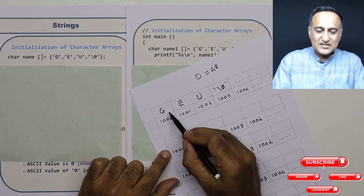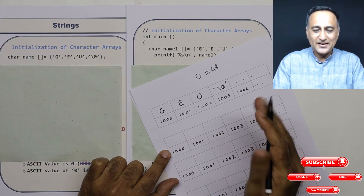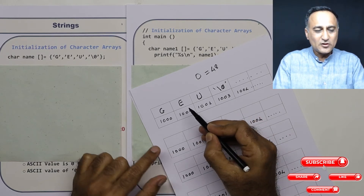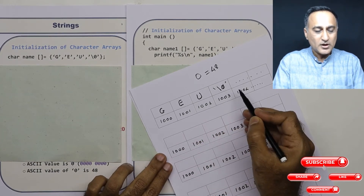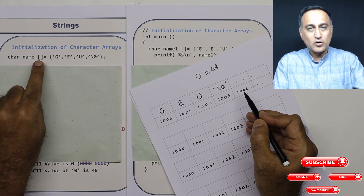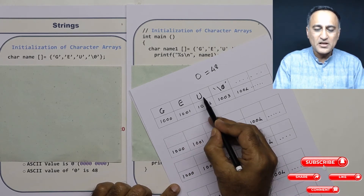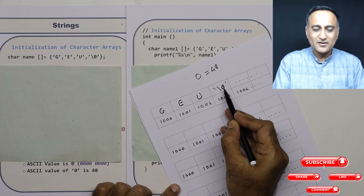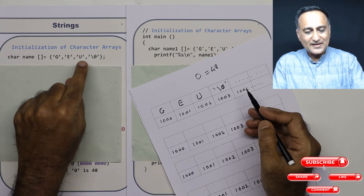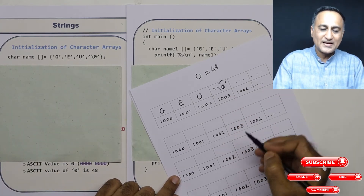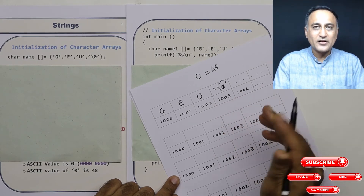Since I have given it 'geu' followed by null, the null indicates that 'geu' has ended. The dimension of this name array is going to be 4. The size of this array is determined automatically based on how many characters I initialize, plus one character for the null. If I am initializing an array of characters one character at a time, it is my responsibility to put the null character. Failure to put the null character will result in printing garbage values.